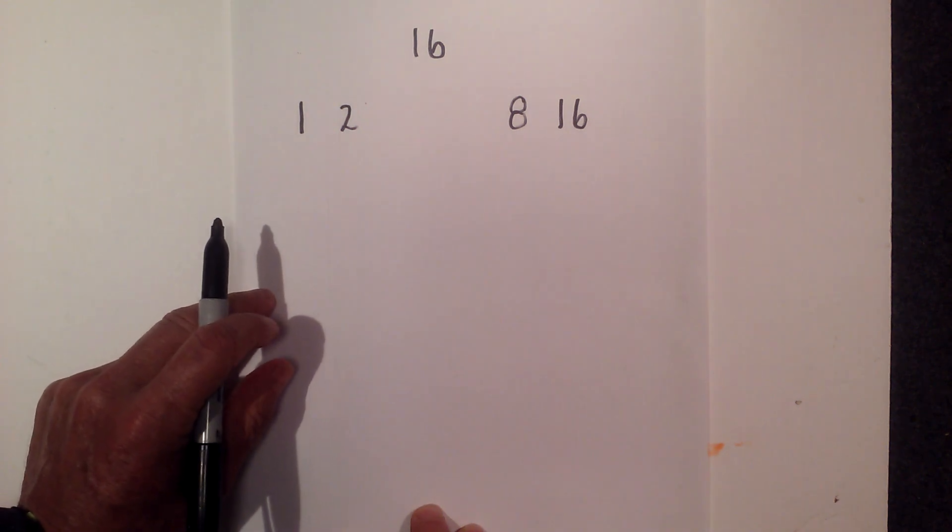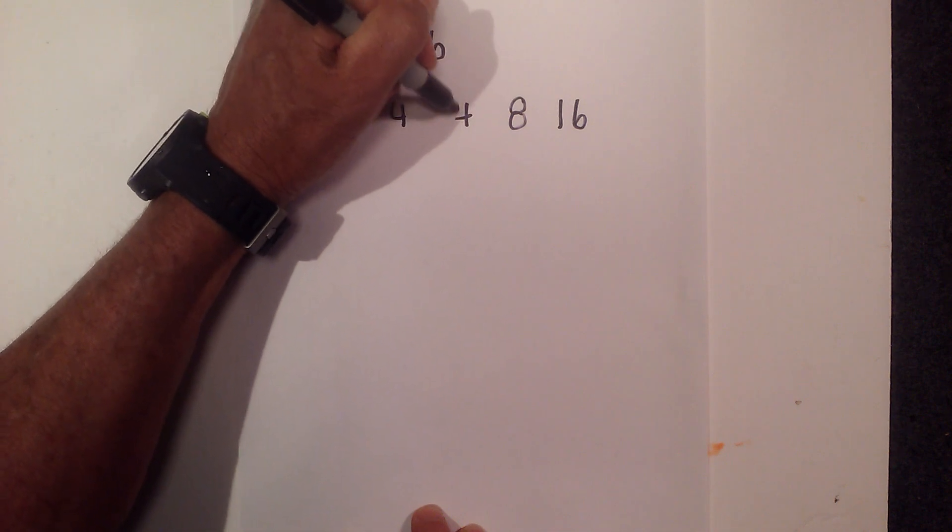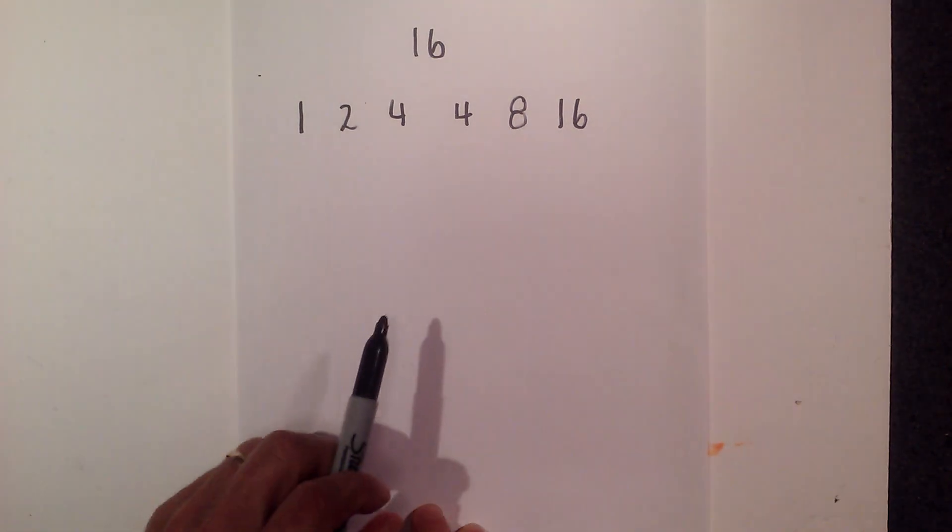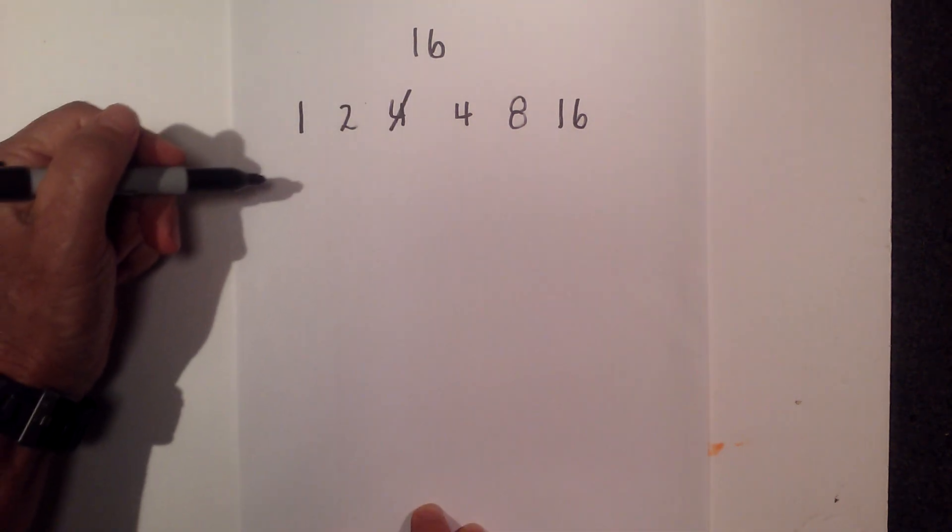3 will not go into 16 but 4 times 4 will go into 16 and the gap is closed so there's no other numbers in between. So I'm going to cross one of the fours out.